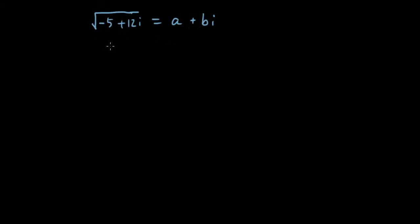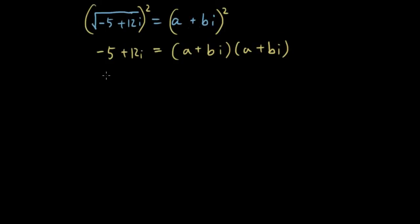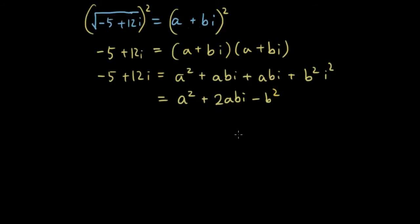From this equation, let's now square both sides. So if I square both sides, then I have negative 5 plus 12i on the left, since the squared sign cancels out with the square root. And on the right hand side I have a plus bi squared, which is (a plus bi)(a plus bi). If I expand it out using binomial expansion, I will get a squared plus 2abi minus b squared.